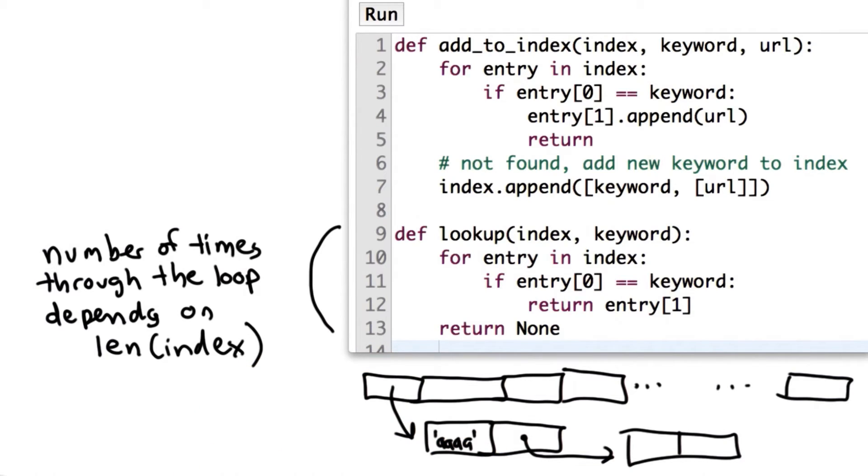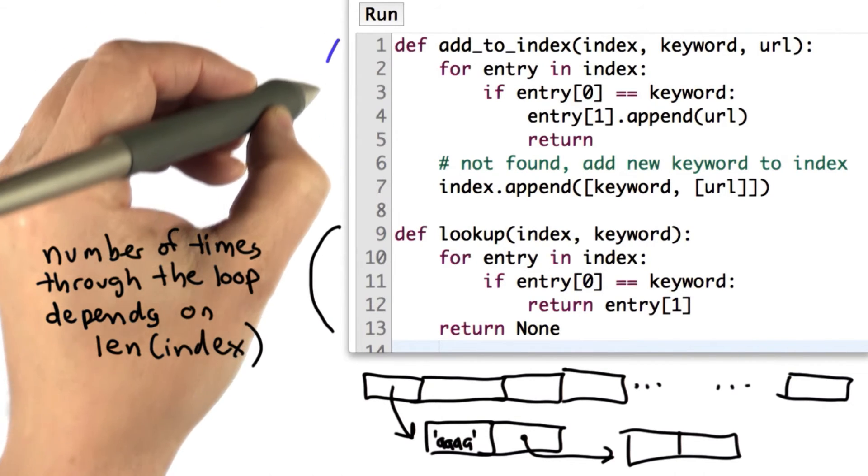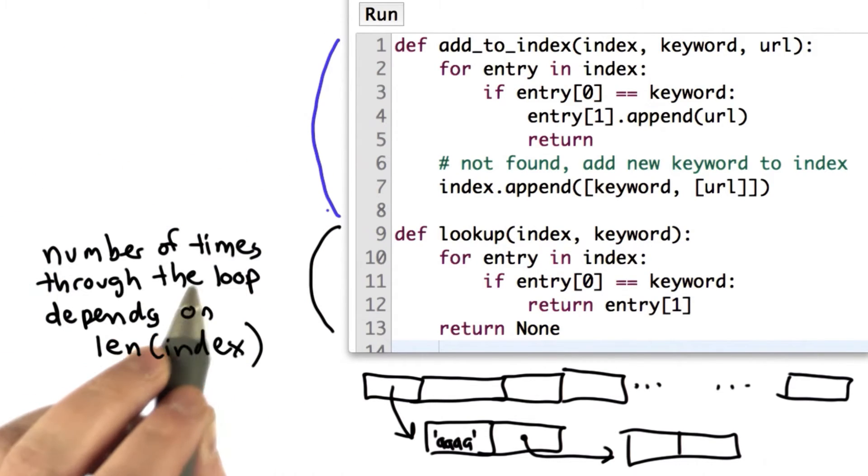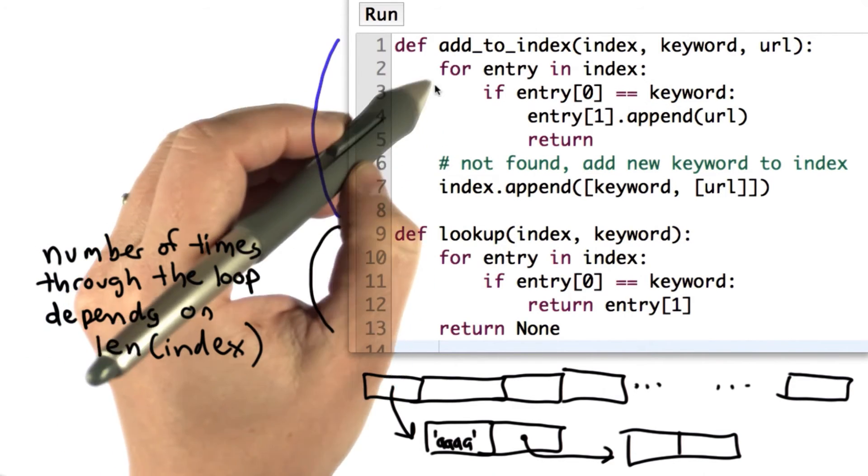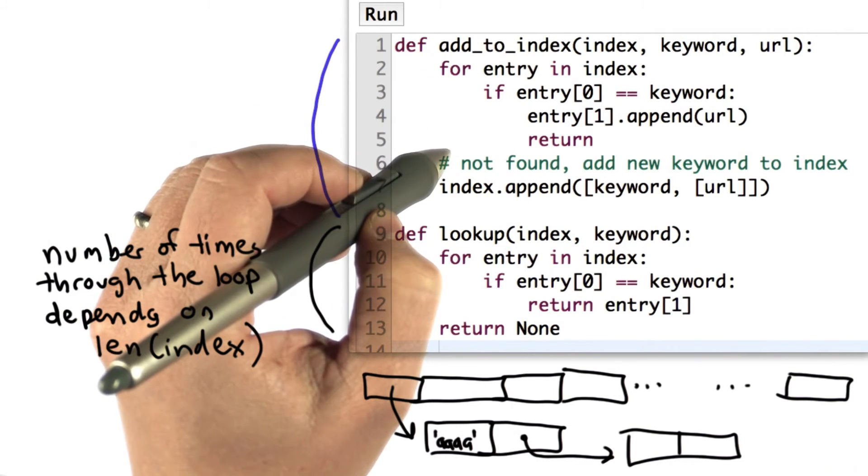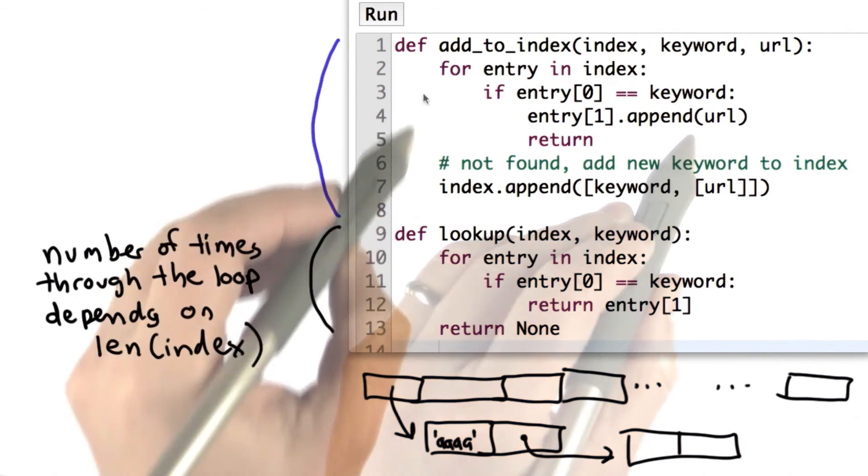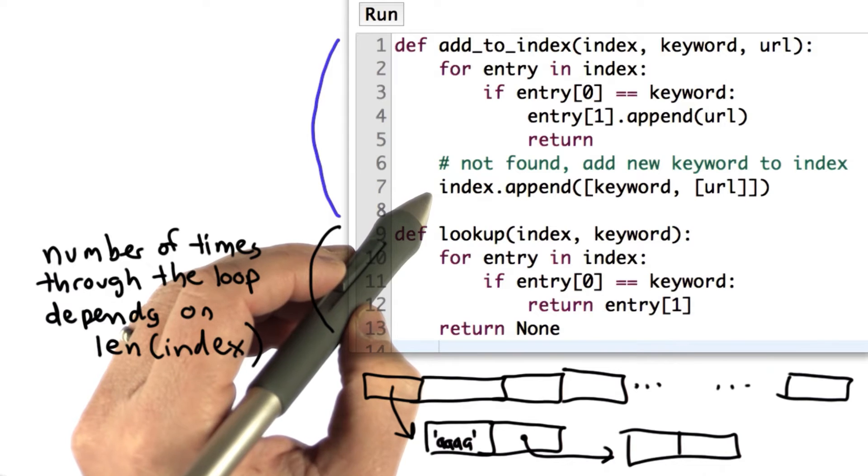The other code that you see here that's relevant to this is the code for add_to_index. And the reason that's relevant is we want to know what the structure of the index is after we made our big index. What add_to_index does is also loop through all the entries to find if one already exists, then it adds that URL. If one doesn't exist, it adds the new entry at the end.